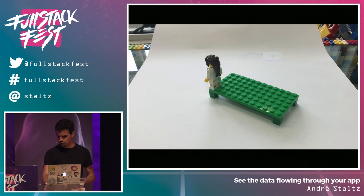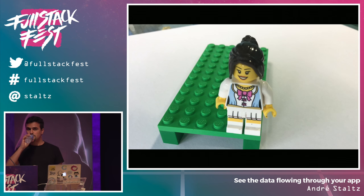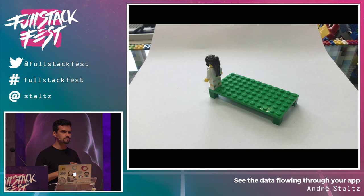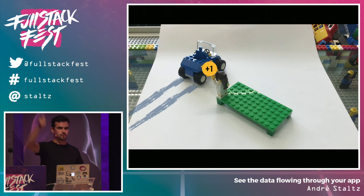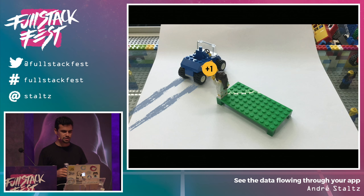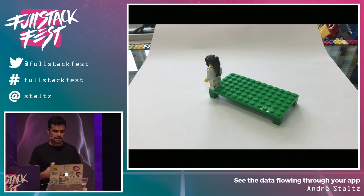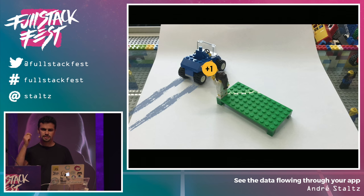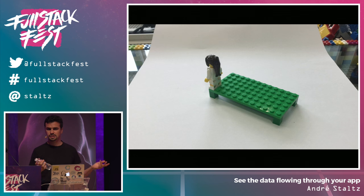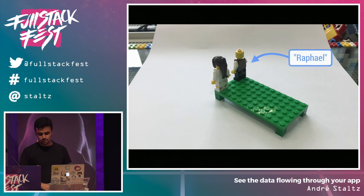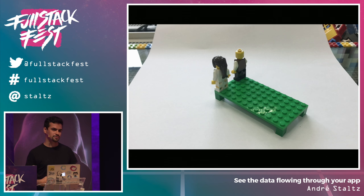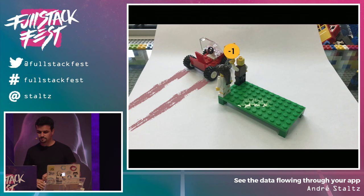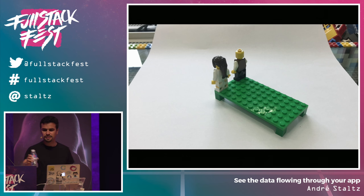We have Julia on the stage. What Julia does is she likes to observe the outside world. Whenever a blue car passes by, Julia reacts by raising a sign that says plus one. If a red car or black car passes by, she doesn't care. Blue cars — for some reason — she raises a sign. That's her whole life: she just stands there. Then we also have Raphael on stage. Raphael does almost the same thing, but he's interested in red cars. Whenever a red car passes by, Raphael raises a sign that says minus one. Julia doesn't care.